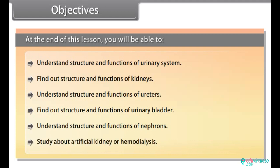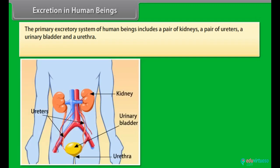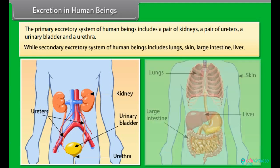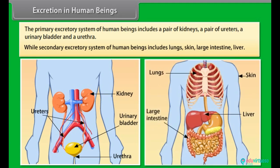The primary excretory system of human beings includes a pair of kidneys, a pair of ureters, a urinary bladder, and a urethra. The secondary excretory system of human beings includes the lungs, skin, large intestine, and liver.